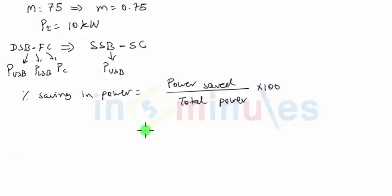So total power saved in this case, we are transmitting only the upper sideband power, and hence I will not be transmitting carrier power and the lower sideband power. So power saved will be PC plus PLSB divided by the total power PT. We need the values of PC and PLSB so that I can find the percentage saving in power.